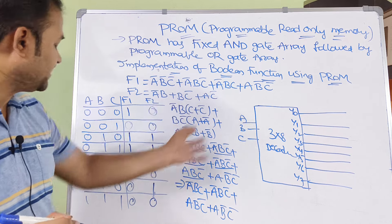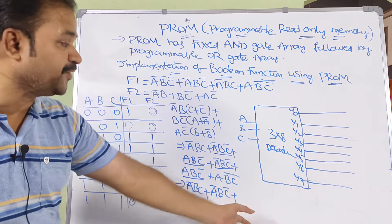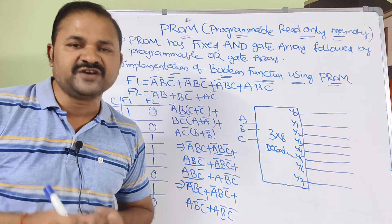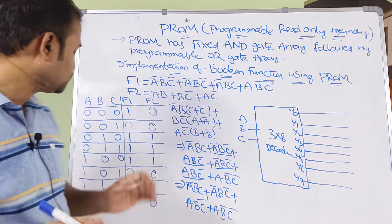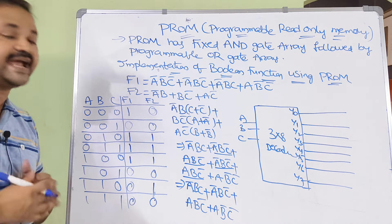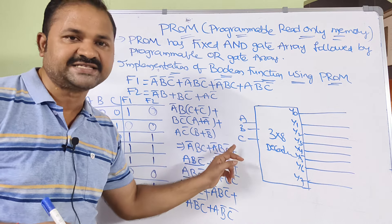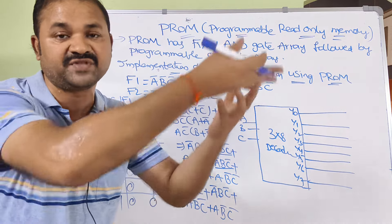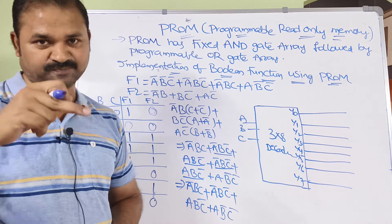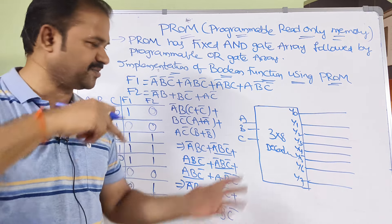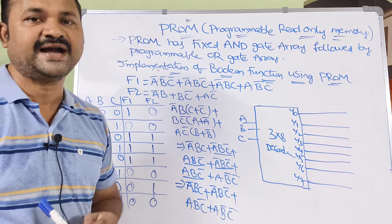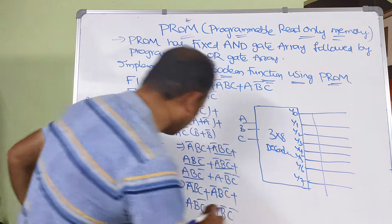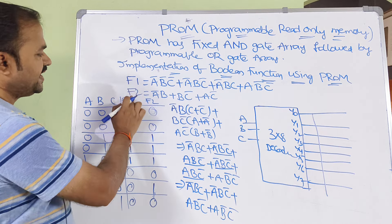Now we have to implement this with the help of PROM. In the PROM diagram, the fixed AND gate array is implemented using a decoder. We have 3 inputs producing 8 outputs — a 3-to-8 decoder with inputs A, B, C producing outputs Y0 to Y7. This is internally implemented with AND gates. We also have 2 outputs: the first output is F1 and the second output is F2.